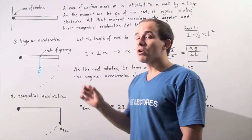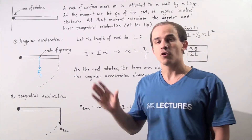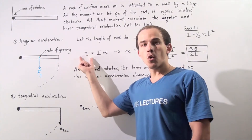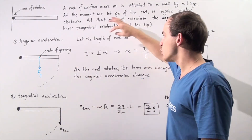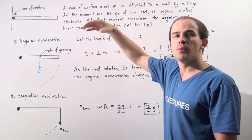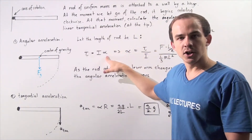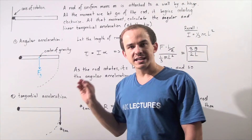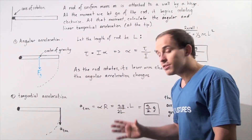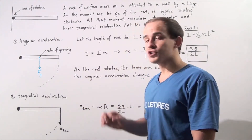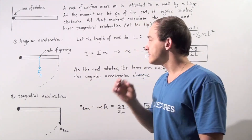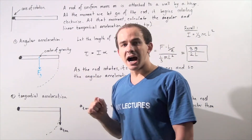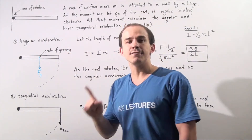Recall that our analogous equation for Newton's second law of motion for angular motion is given by the following formula. The net torque acting on the object is equal to our moment of inertia of the object multiplied by the object's angular acceleration, which is given by alpha. So what exactly is the force acting on our rod that's creating that rotational motion? We need to find what force creates our torque.